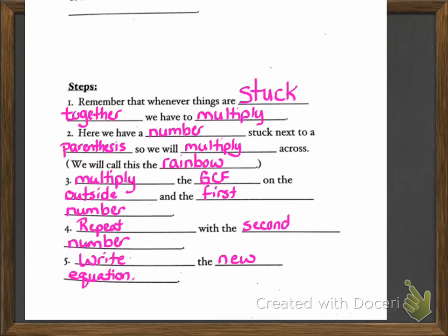Now we're going to finish filling in the steps for that second part there. Step 1 says remember that whenever things are stuck together, we have to multiply. Here we have a number stuck next to a parentheses, so we will multiply across. This is the part where we're talking about how when you have a number outside the parentheses without a math symbol between them, that means you have to multiply. We're going to call this the rainbow. Some people call this Spider-Man because you're kind of making a web across things.